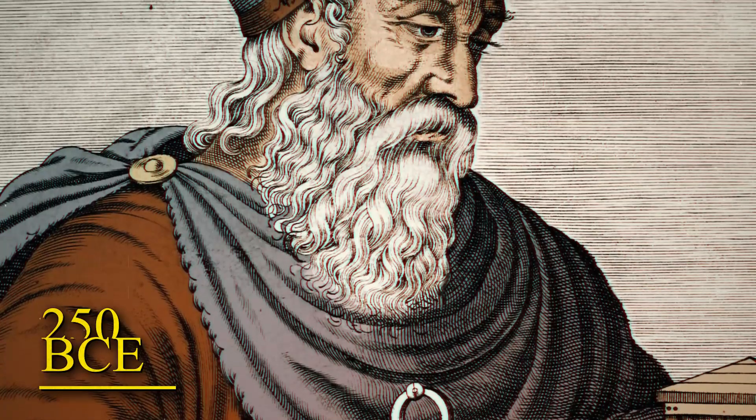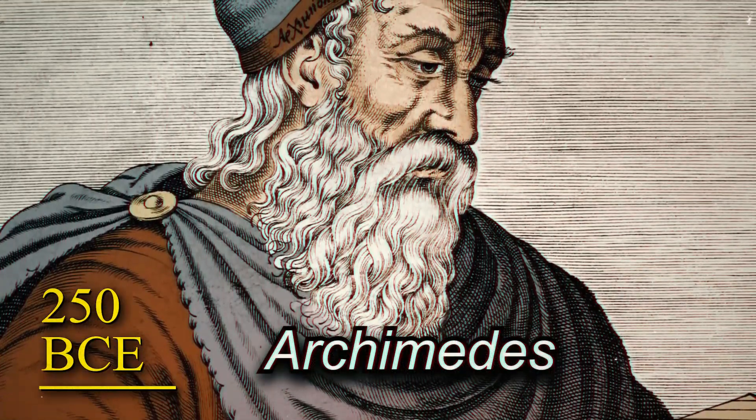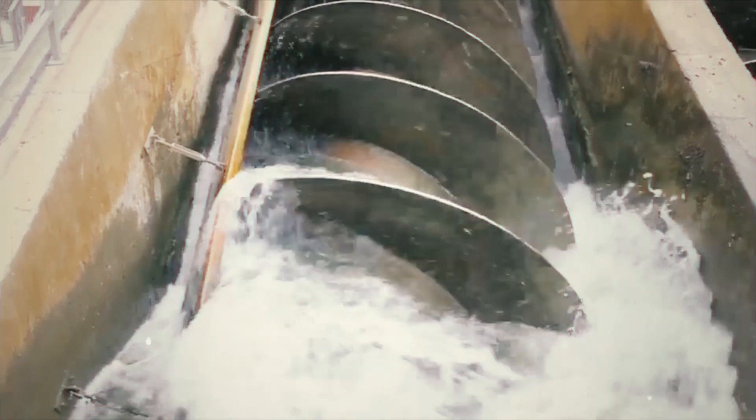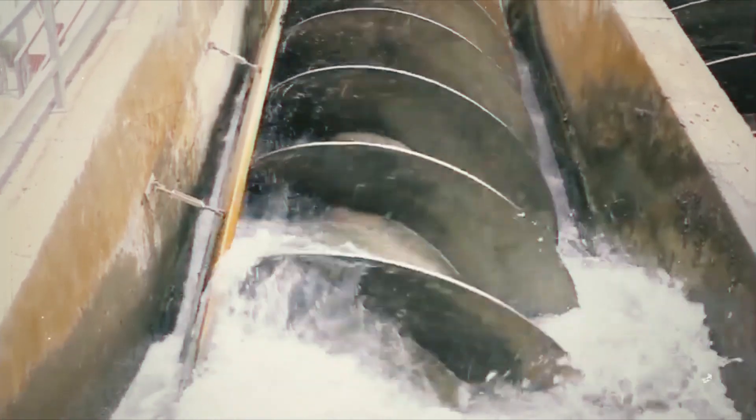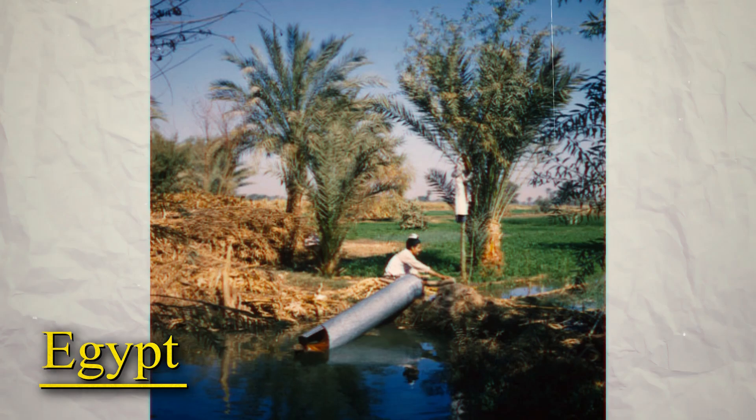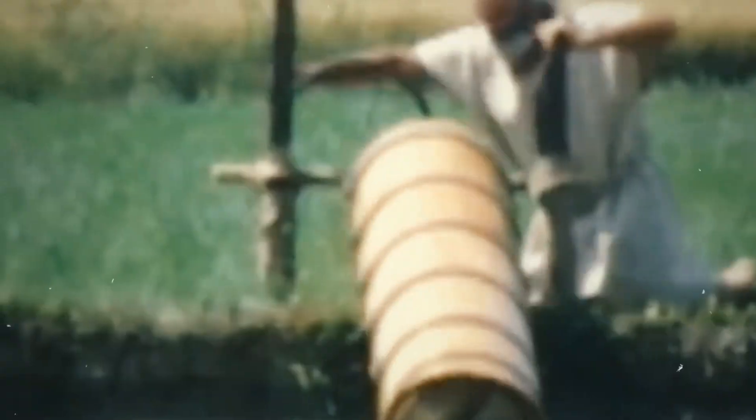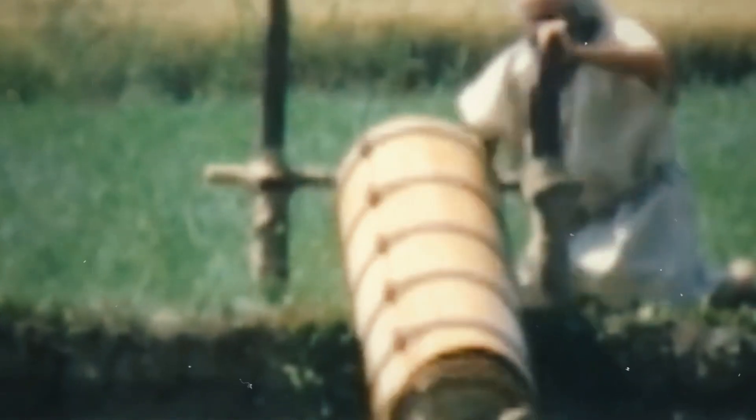Around 250 BCE, a Greek mathematician named Archimedes created a tool that worked a lot like a screw. Known as the Archimedean screw, it was designed to lift water, a big deal for farming in places like Egypt. Picture a hollow wooden tube with a spiral inside. By turning it, farmers could pull water from rivers to water their fields.